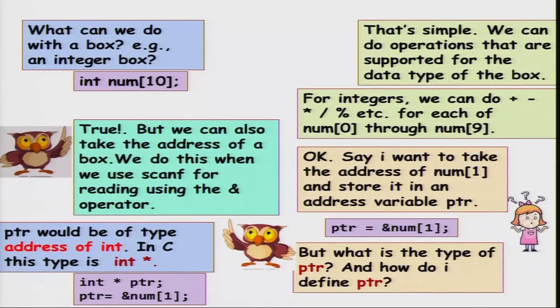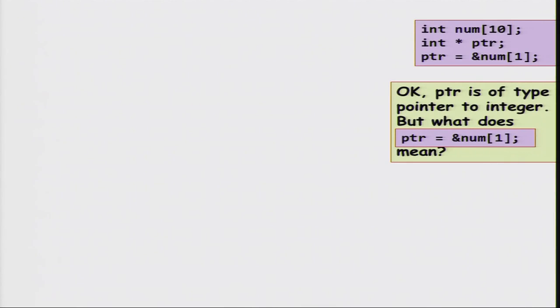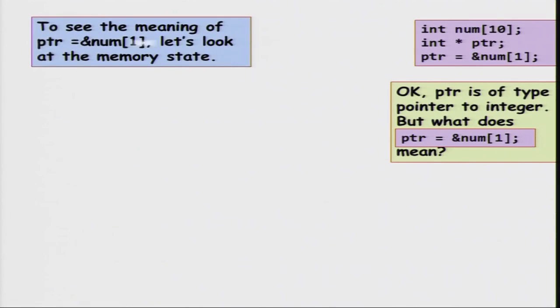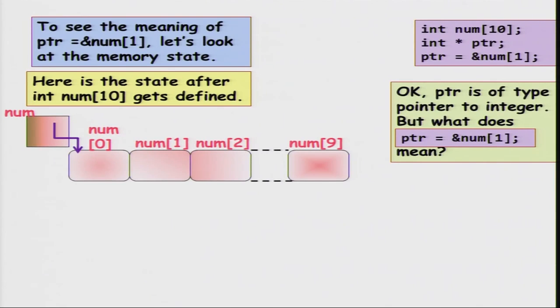In this case we write: int num[10]; int* ptr; and ptr = &num[1]. ptr is a pointer to an integer. What does ptr = &num[1] really mean? Let us look at the memory state once we declare this array. We have num which is the address of the first location, and somewhere in memory we have 10 consecutive locations corresponding to num[0] through num[9].